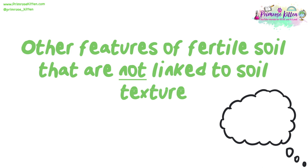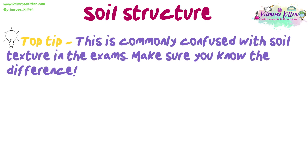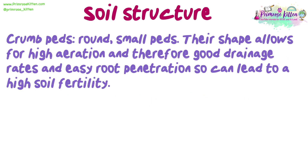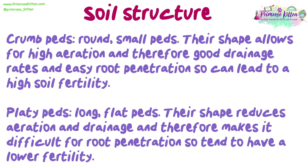Other features of fertile soil that are not linked to soil texture: soil structure. Exam top tip — this is commonly confused with soil texture in the exams, so make sure you know the difference. Soil structure is the way in which soil particles clump together to form aggregates called PEDs. Remember, soil texture is the proportion of sand, silt, and clay in the soil. Crumb PEDs are round, small PEDs — their shape allows for high aeration and therefore good drainage rates and easy root penetration, so can lead to high soil fertility. Platy PEDs are long, flat PEDs — their shape reduces aeration and drainage and therefore makes it difficult for root penetration, so they tend to have a lower fertility.